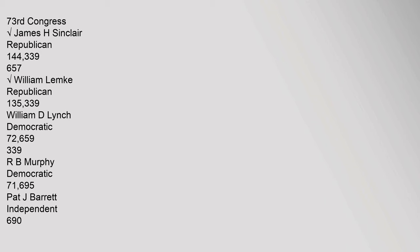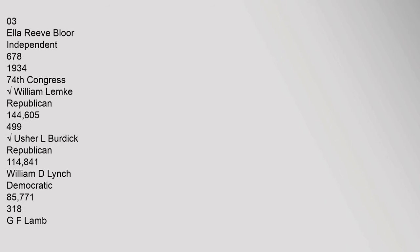1932 (73rd Congress) — James H. Sinclair, Republican: 144,339 (65.7%); William Lemke, Republican: 135,339; William D. Lynch, Democratic: 72,659 (33.9%); R.B. Murphy, Democratic: 71,695; Pat J. Barrett, Independent: 690; Ella Reeve Bloor, Independent: 678. 1934 (74th Congress) — William Lemke, Republican: 144,605; Usher L. Burdick, Republican: 114,841; William D. Lynch, Democratic: 85,771 (31.8%).